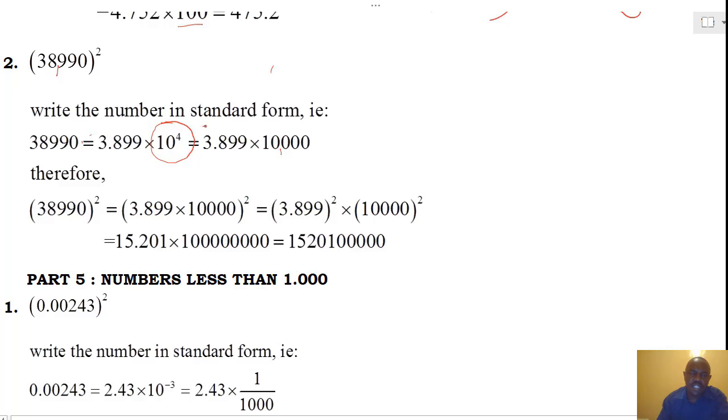Next, we take the number that we have got. We substitute it now to the initial position of 38,990. And hence, our number becomes 3.899 times 10,000, everything squared.